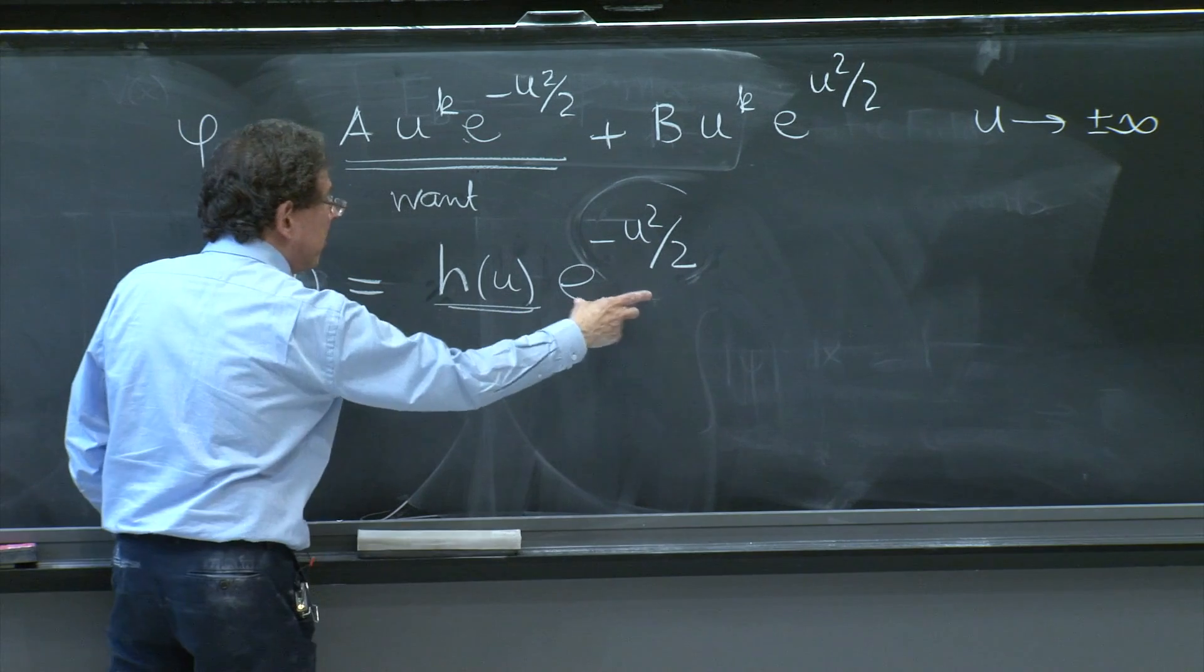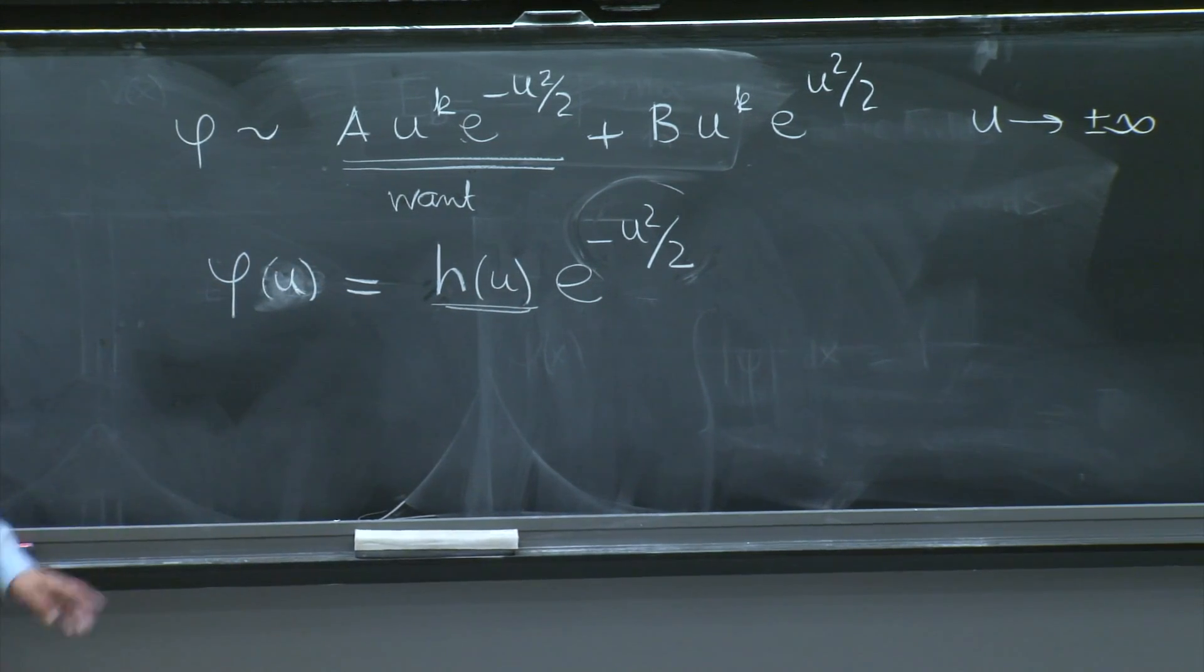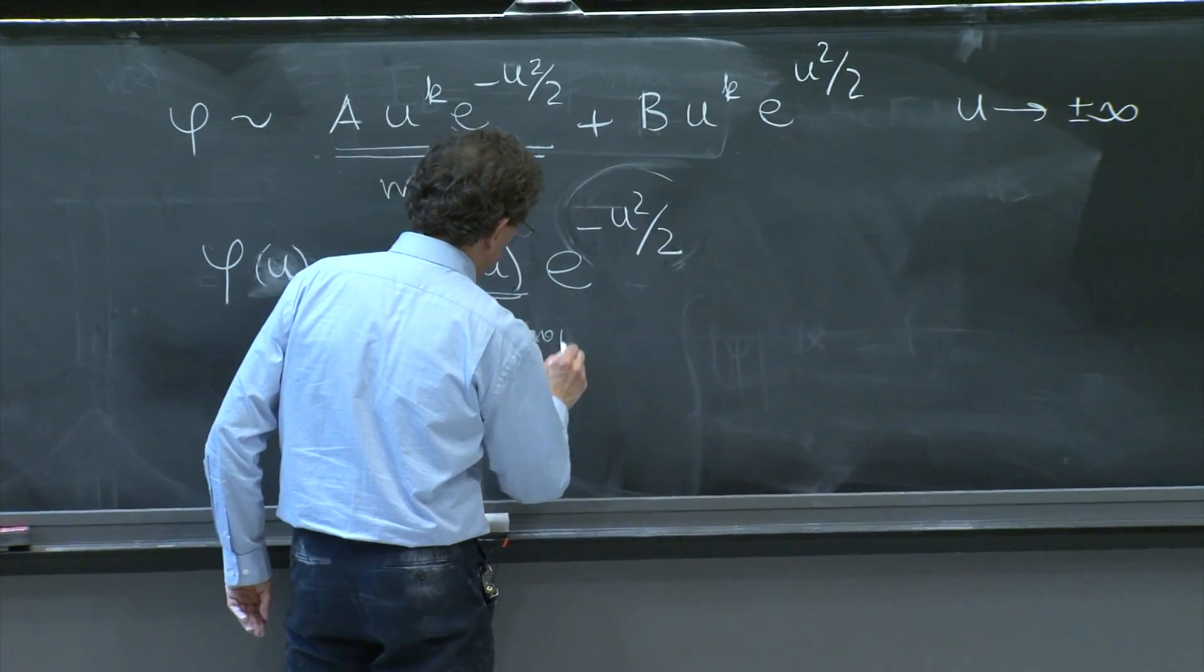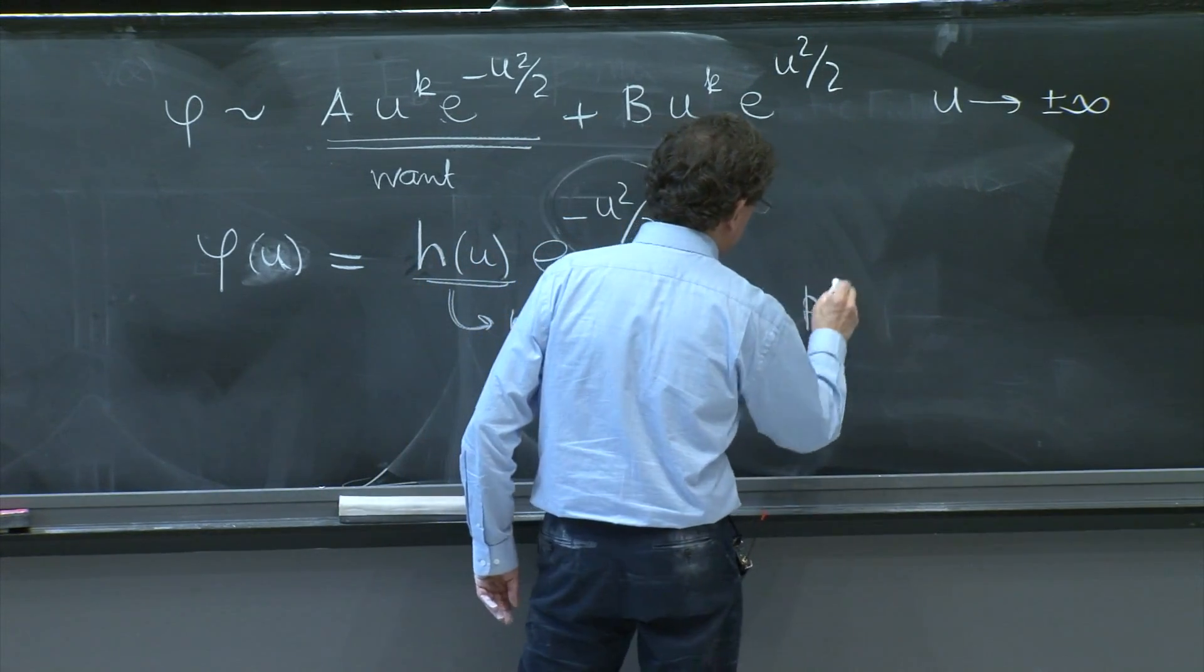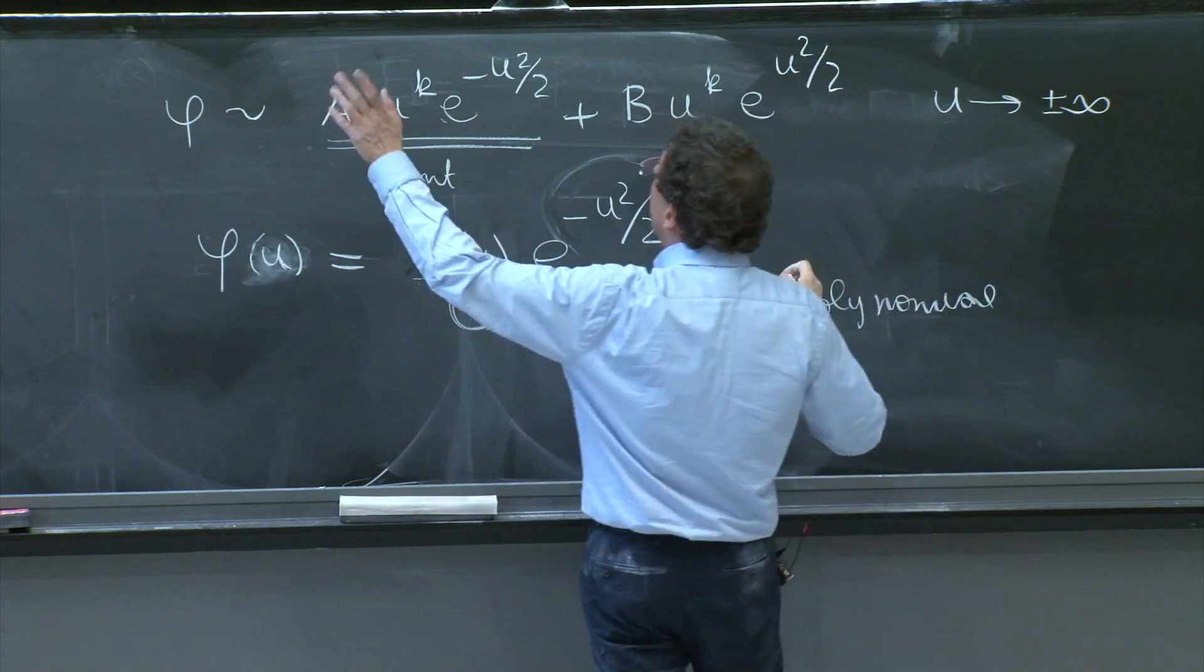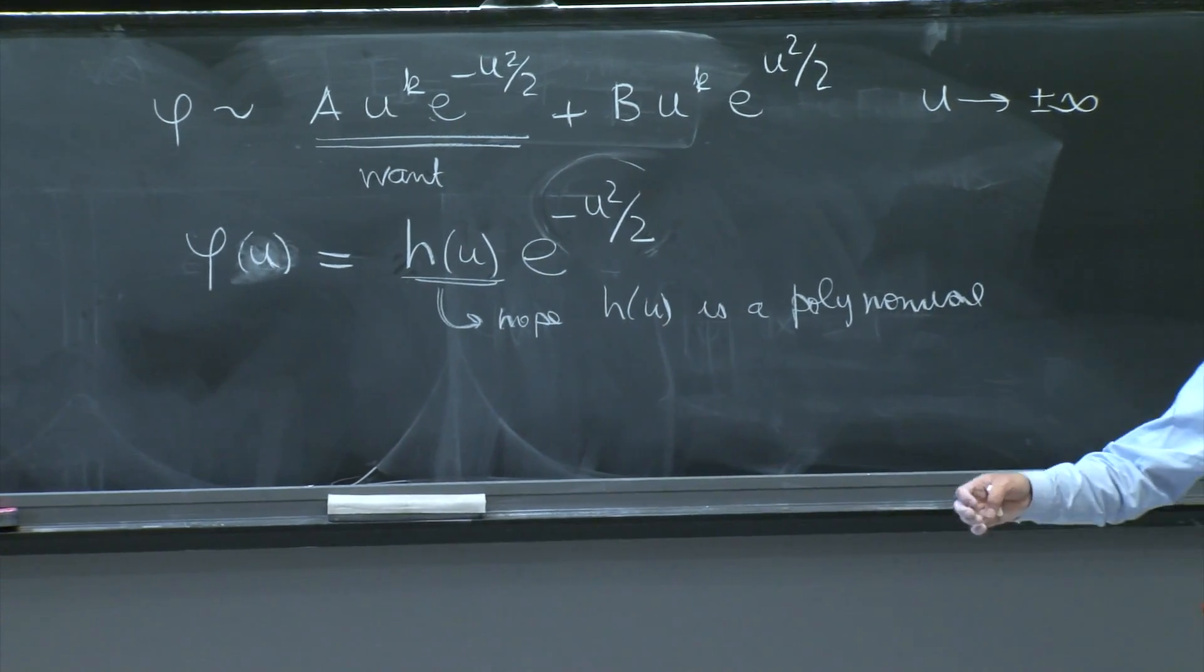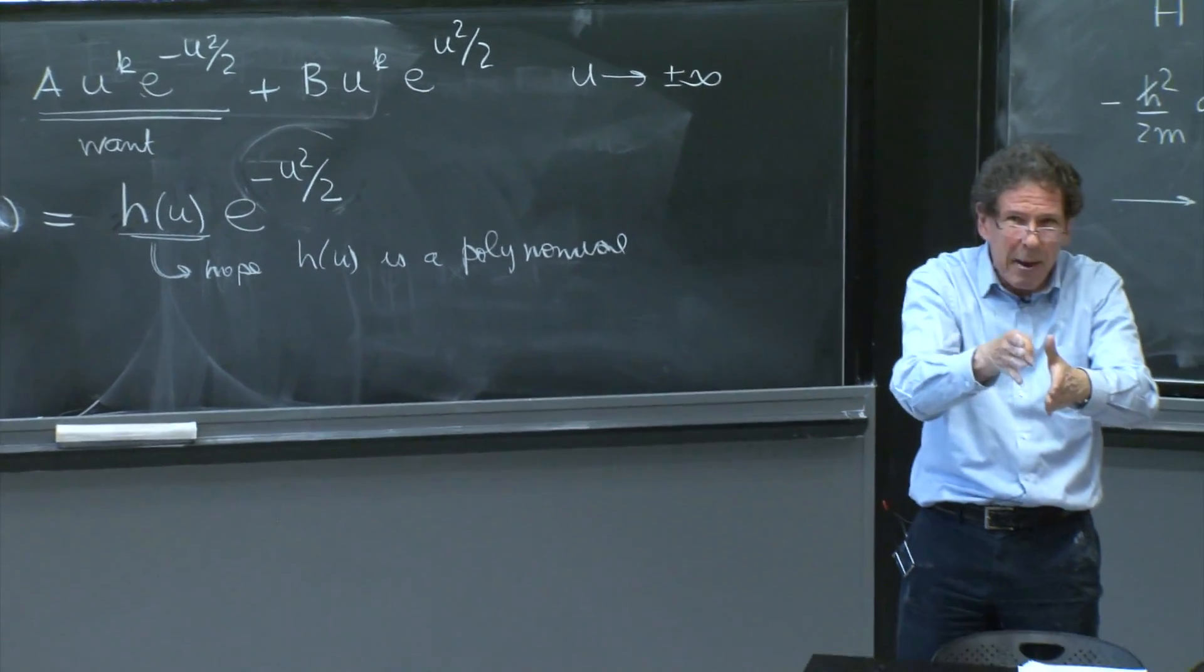This will be integrable, so if this function doesn't diverge, it will be a great thing. In particular, we could hope that h of u is a polynomial. You see, if somebody would have come and said, look at that equation, could that be a polynomial?